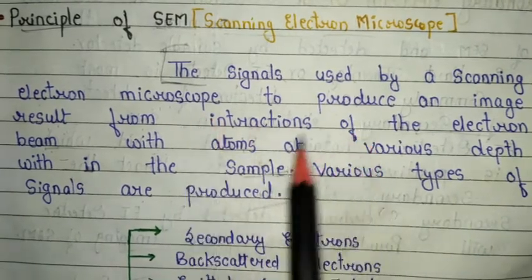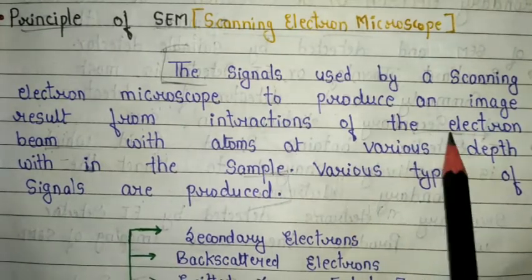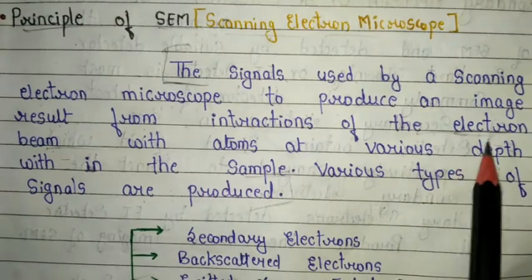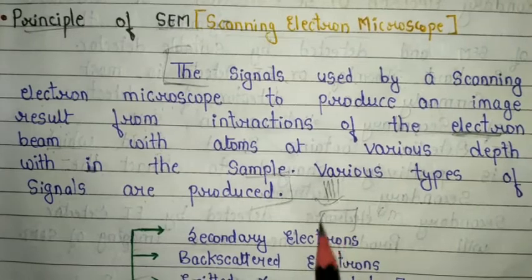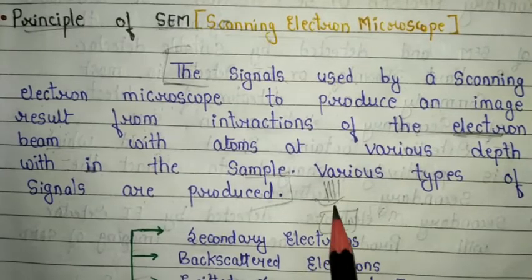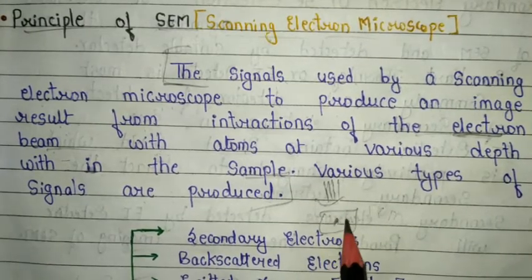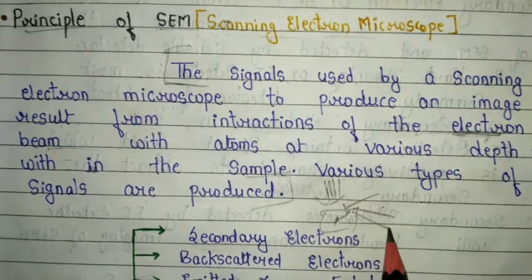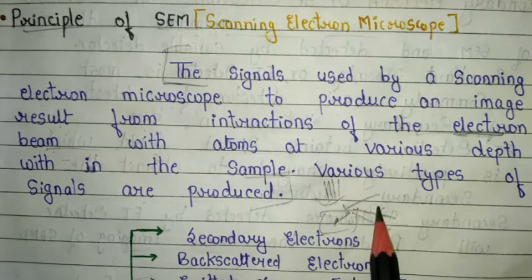The basic principle at work is: we use an electron beam in the scanning electron microscope. When the electron beam is bombarded onto the sample, and the atoms of the sample interact with the electron beam, three types of signals are produced. This is the basic principle by which the scanning electron microscope works.